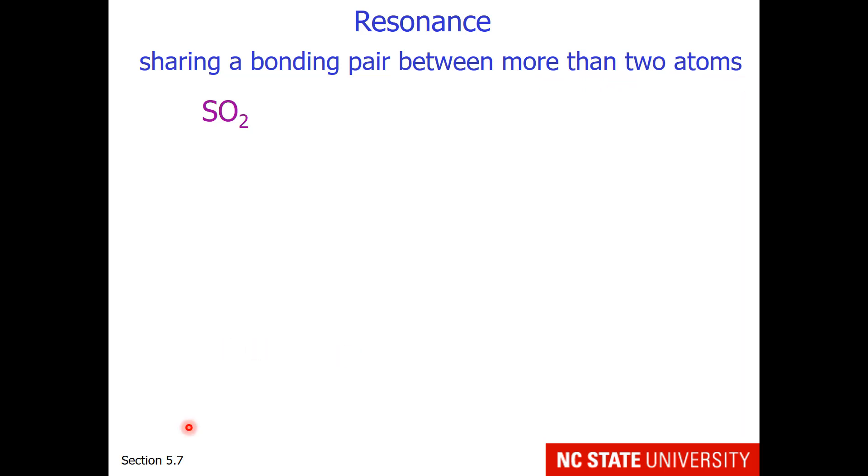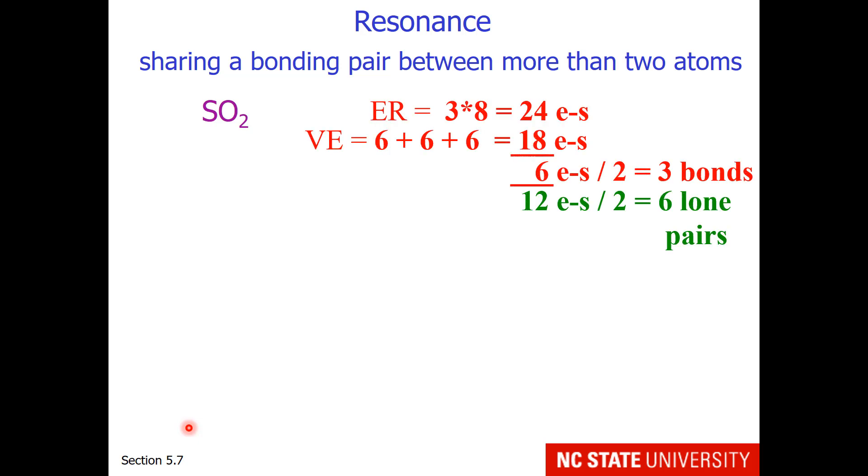If students were asked to draw sulfur dioxide, one would go through the math and discover there are three bonds. So in a large class, a portion of the students might draw SO2 with the double bond on the left, and a portion may draw SO2 with a double bond on the right. These are what is known as equivalent resonance structures.